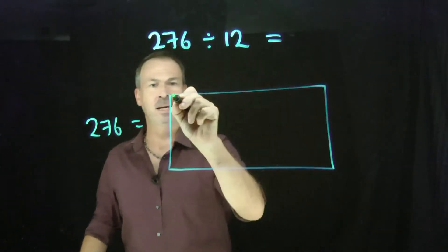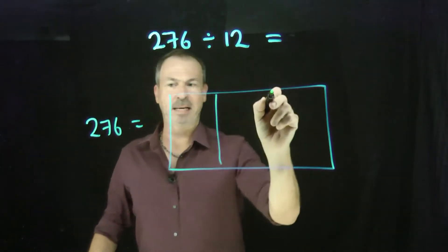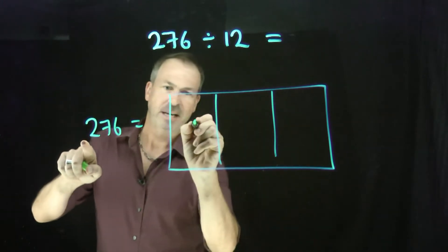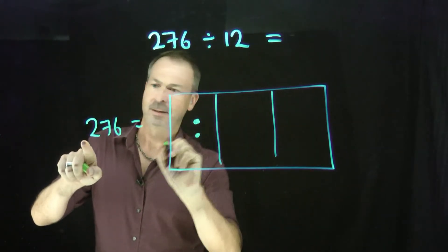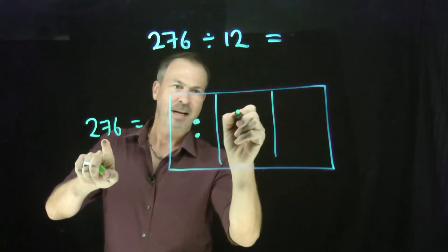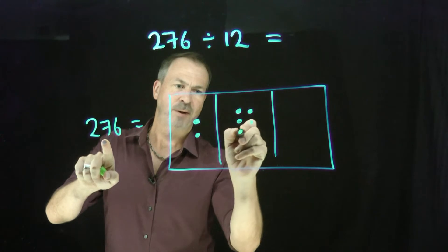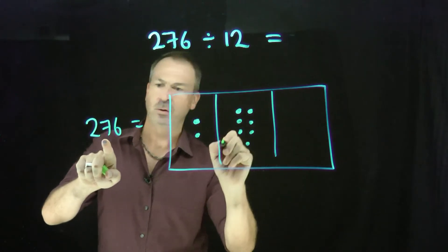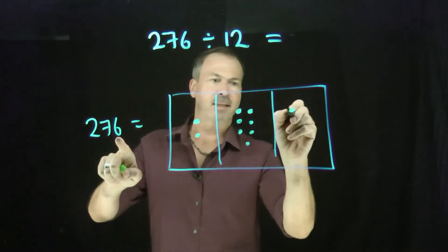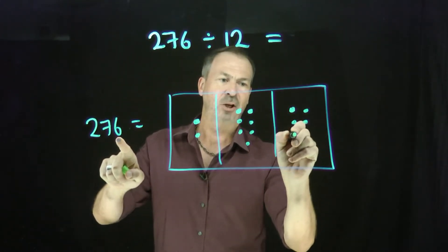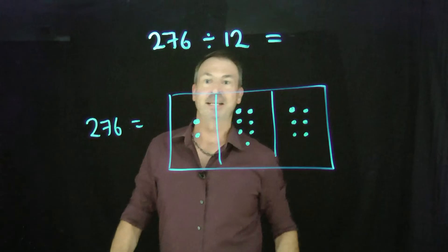So here's a 10-1 machine. I need hundreds, tens and ones. I need two hundreds — there they are. I need seven tens: one, two, three, four, five, six, seven. Great. And six ones. There's a lovely picture of 276.